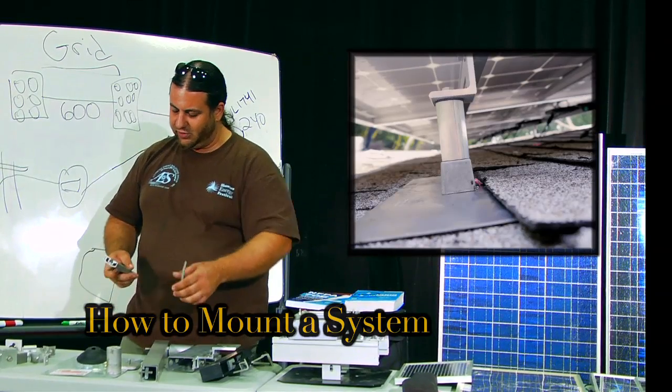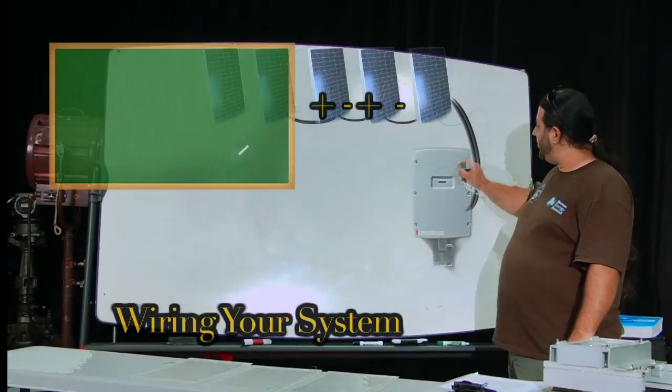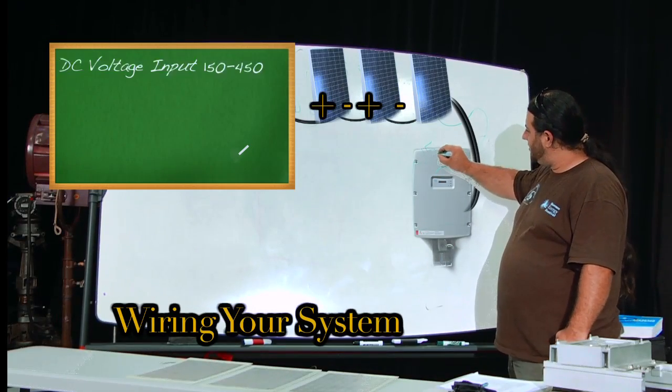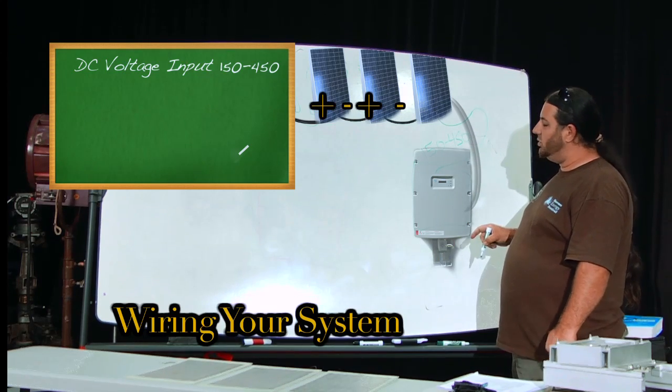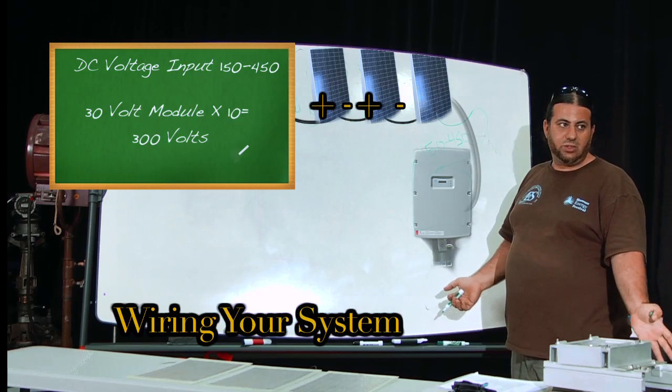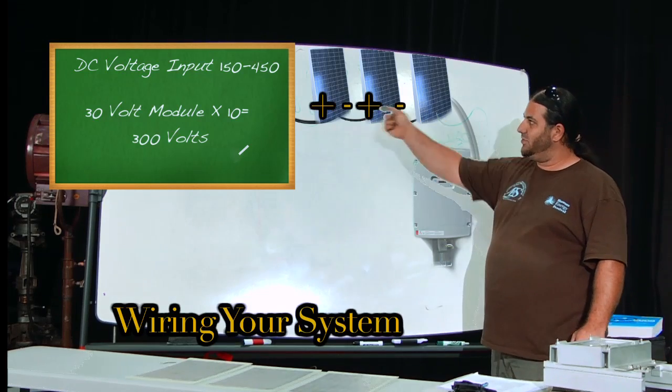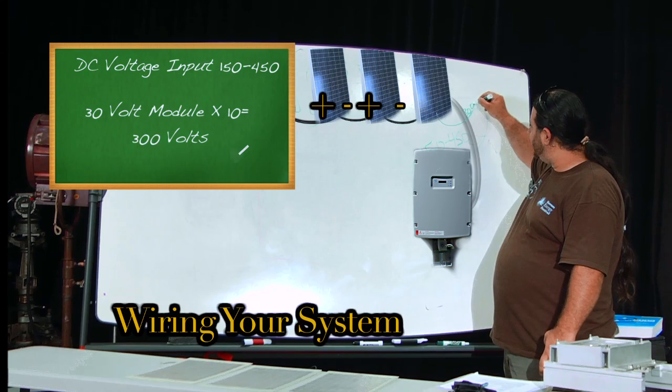DC voltage input of 150 to 450 volts. So if the module itself is a 30 volt module, we could put 10 of them in series and then we would have 300 volts coming in, and that would be within that range, no problem with that inverter.